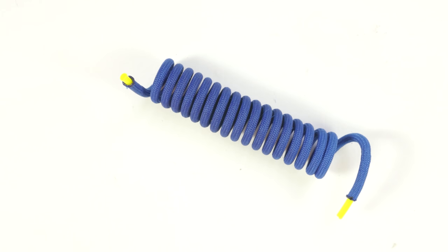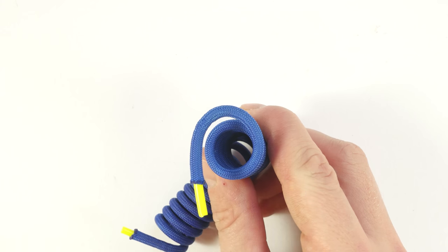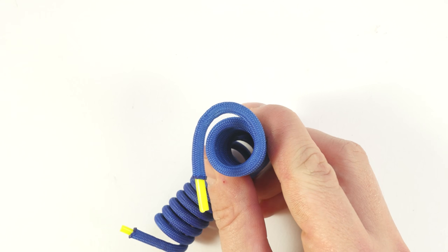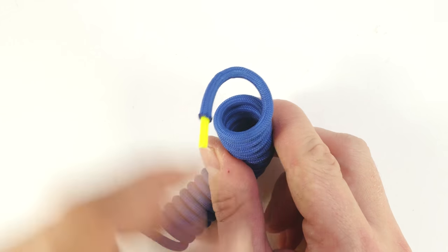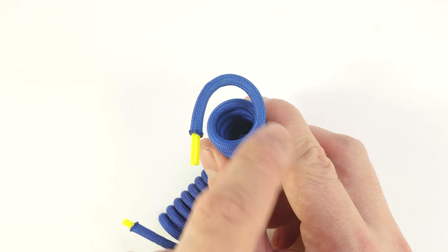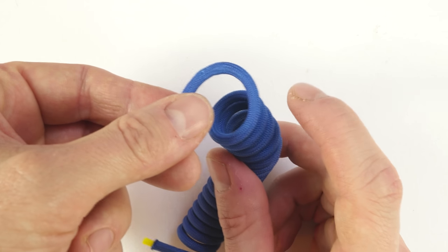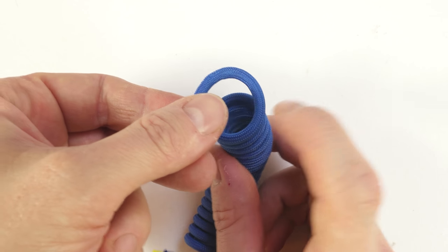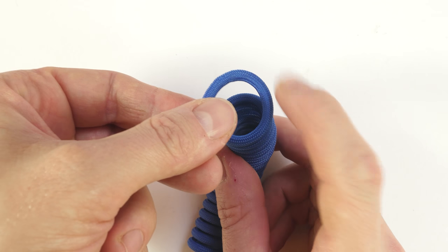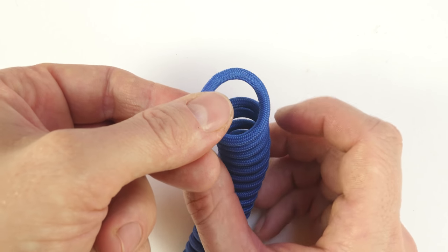Reversing the coil takes a bit of getting used to. You can play around with it a little bit, and you're going to figure it out by yourself. The easiest way that I can explain it is that you grab the coil and you see in which direction it is coiling to. So this one is coiling counter-clockwise or to the left. So I'm going to grab the end and I'm going to rotate the rest of my lanyard counter-clockwise or to the left as well.